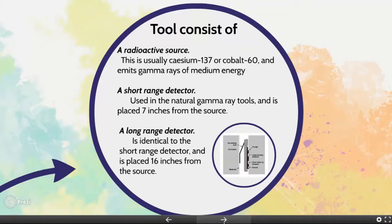The long-range detector is identical to the short-range detector and is placed 16 inches from the source. The short-range detector is very similar to the detectors used in natural gamma ray tools and is placed at 7 inches from the source.